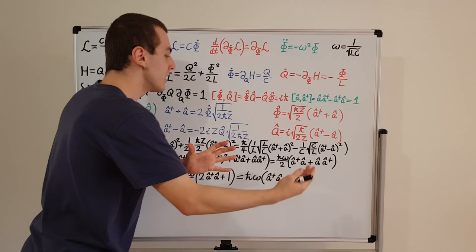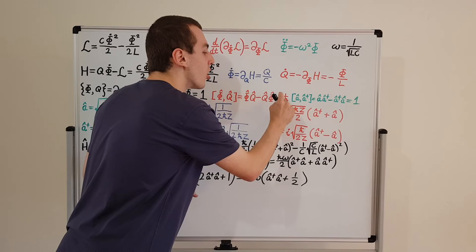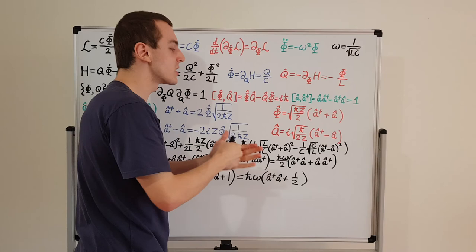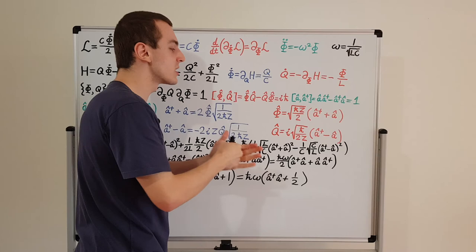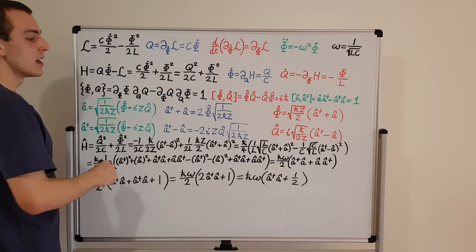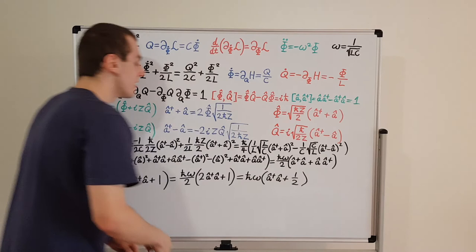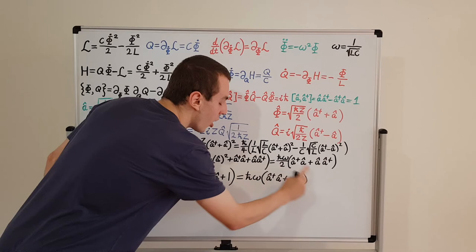We also found that the Poisson bracket of phi and Q is equal to 1, and by analogy the commutator of phi-hat and Q-hat is equal to i h-bar. When you go from the Poisson bracket to the commutator in quantum mechanics, you introduce this factor of i h-bar, and implicitly there is an identity operator. We defined the ladder operators and used those definitions to derive expressions for phi and Q in terms of the ladder operators. Then we took the Hamiltonian and substituted those definitions inside, giving us the familiar form.